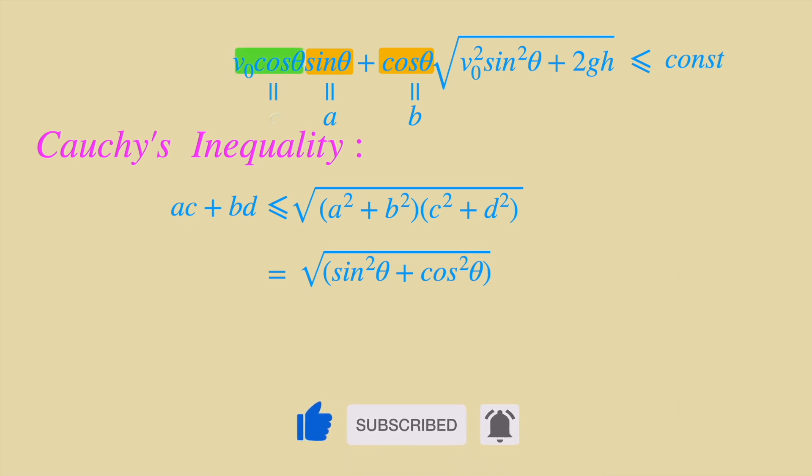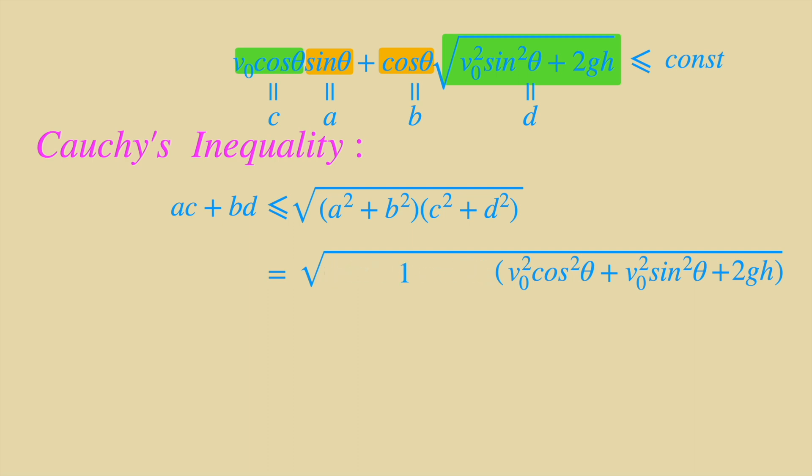Let c equal v0 times cosine theta, d equals square root of v0 squared sine squared plus 2gh. The second item turns to be square root of v0 squared cosine squared plus v0 squared sine squared plus 2gh. And we know sine squared plus cosine squared equals 1, v0 squared cosine squared plus v0 squared sine squared equals v0 squared for the same reason. So we get square root of v0 squared plus 2gh, which is the constant that we need.